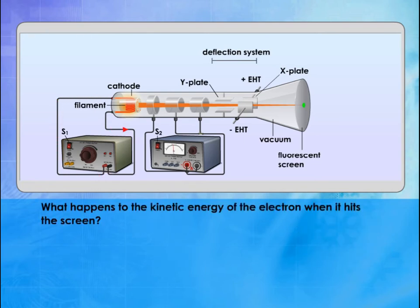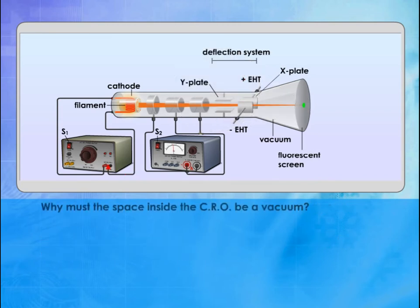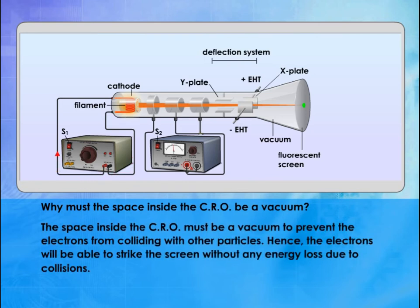When an electron hits the screen, its kinetic energy would be converted into light and heat. The space inside the CRO must be a vacuum to prevent the electrons from colliding with other particles. Hence, the electrons will be able to strike the screen without any energy loss due to collisions.